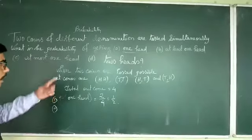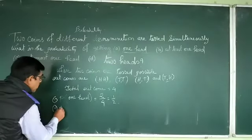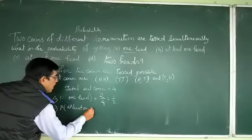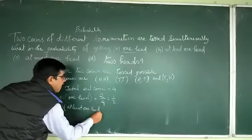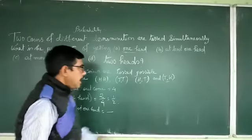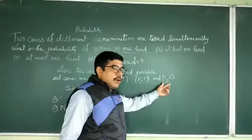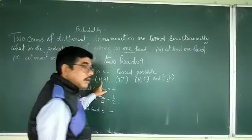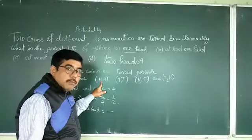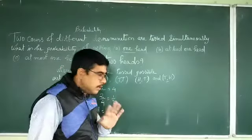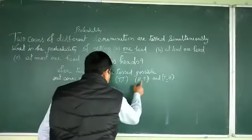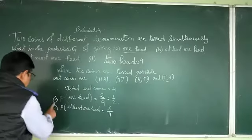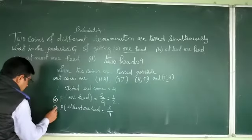Next, at least one hit. At least means minimum one hit. So here we count minimum one hit: one time, two times, three times — that's three outcomes out of four. So the probability of at least one hit is three by four.